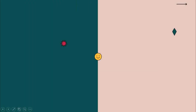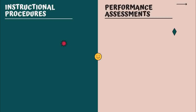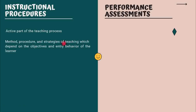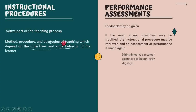The next component is instructional procedures. Instructional procedures refer to what teaching methods you are going to use in the teaching — for example, chart methods, audiovisual aids, demonstrations, or other strategies. You choose the method based on the students' behavior and their previous knowledge. This is very important and we have to do the evaluation.